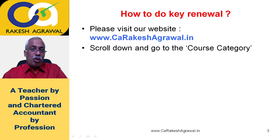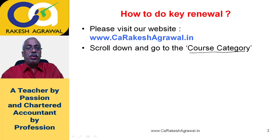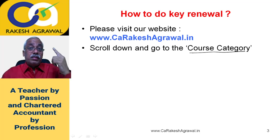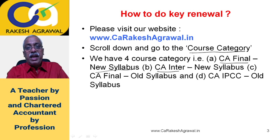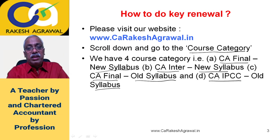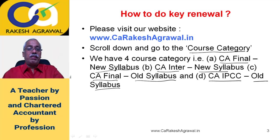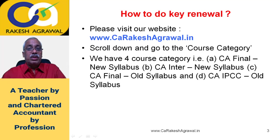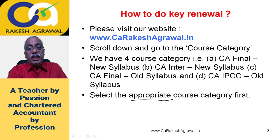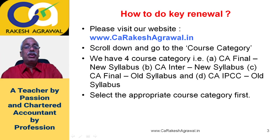Once you visit the site, scroll down a little and go to the course category section, or you can go from the video lecture section on the top row. You'll find four course categories: CA Final New Syllabus, CA Intermediate New Syllabus, CA Final Old Syllabus, and CA IPCC Old Syllabus. Select the appropriate course category to which you belong carefully, so that you don't end up buying a wrong product.